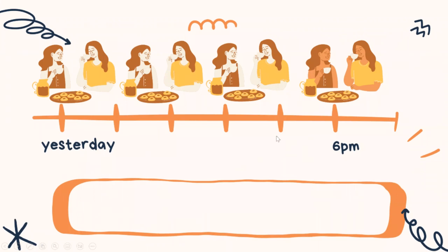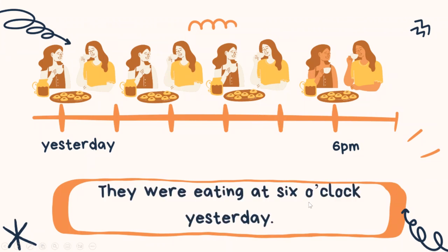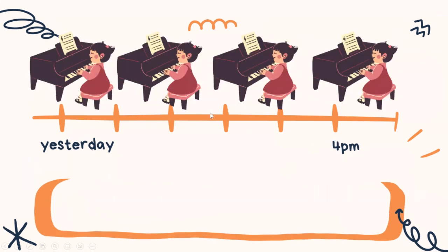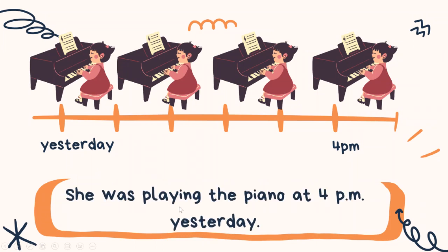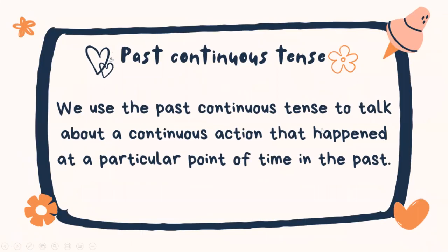And now let's have a look. They were eating at 6 o'clock yesterday. And for this girl, we can also say she was playing the piano at 4pm yesterday. So we use the past continuous tense to talk about a continuous action that happened at a particular point of time in the past.